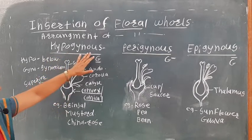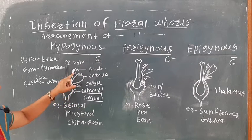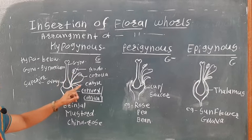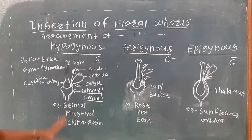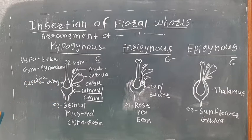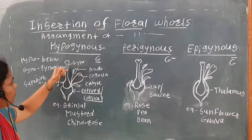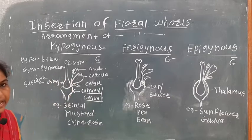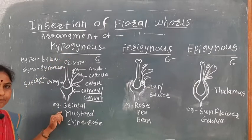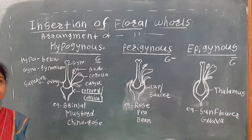In the hypogynous flower, hypo means below and gynos means gynoecium. The floral parts — calyx, corolla, and androecium — are below the gynoecium, so the ovary is always superior. Examples of hypogynous flowers include brinjal, mustard, and china rose.